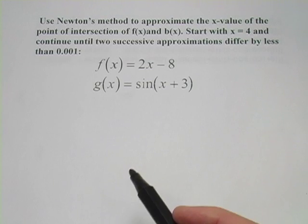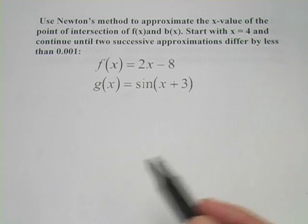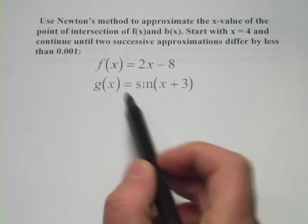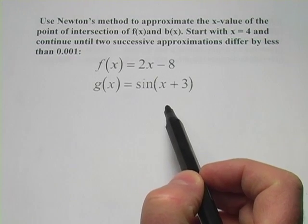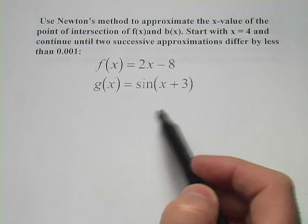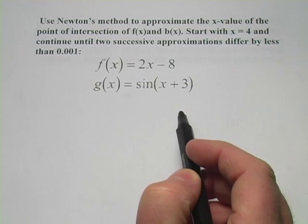In this problem, we're being asked to use Newton's method to approximate the x-value of the point where these two functions intersect, and we've got f(x) = 2x - 8 and g(x) = sin(x + 3).